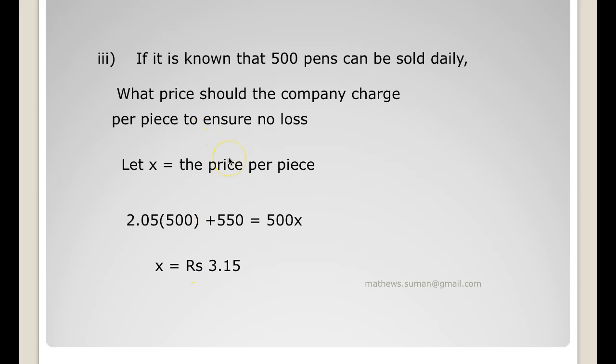If it is known that 500 pens can be sold daily, what price should the company charge per piece to ensure no loss? So let x be the price charged per piece. So we have 2.05y, y is the number of pens that is 500, plus 550 equals 500 times x. So this is the cost function and this is the revenue function. Simplifying we get x equals 3.15.